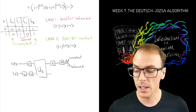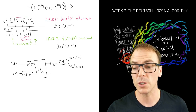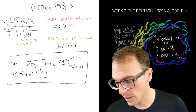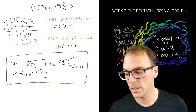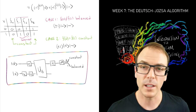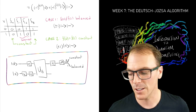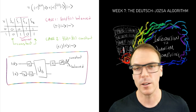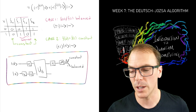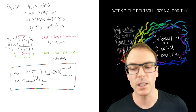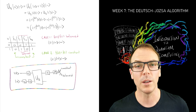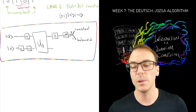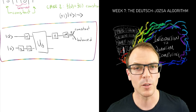You can see in the lecture notes what the Deutsch-Jozsa circuit looks like for n qubits, but this one-bit example illustrates the basic point. The homework is to analyze the n-qubit Deutsch-Jozsa algorithm, which will require some summation notation, but you have all the tools you need from the one-bit example. That's the first quantum speedup you've encountered for a computational problem.